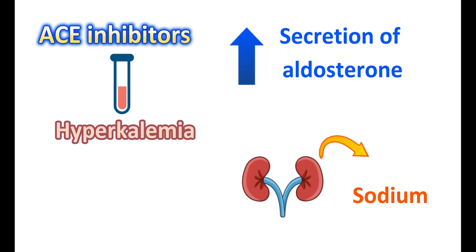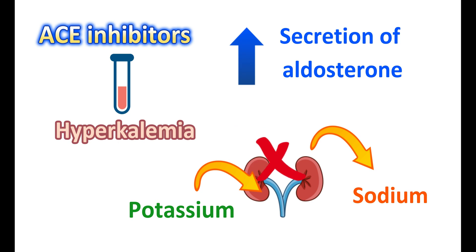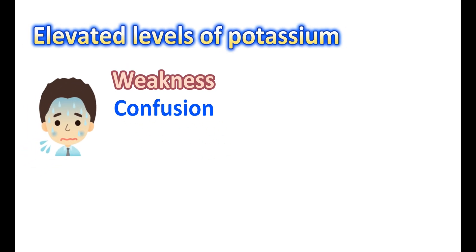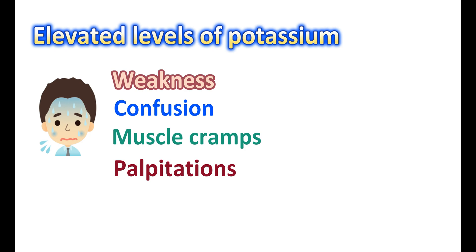Another important side effect of ACE inhibitors is hyperkalemia. Since they inhibit the actions of angiotensin-2, they prevent secretion of aldosterone. Aldosterone is responsible for reabsorption of sodium and water from renal tubules, which allows potassium to enter the urine. When aldosterone action is blocked, sodium is not reabsorbed and is excreted in urine, preventing potassium from entering the urine. Therefore, potassium is more retained in the body, leading to hyperkalemia. Elevated potassium levels may cause weakness, confusion, muscle cramps, palpitations, and increased heart rate.